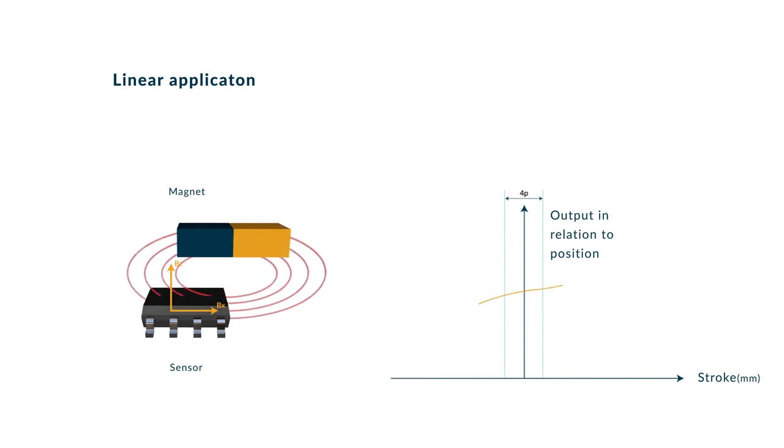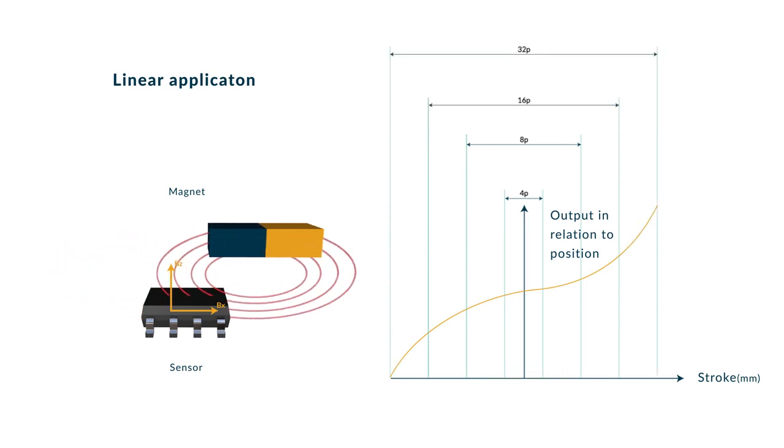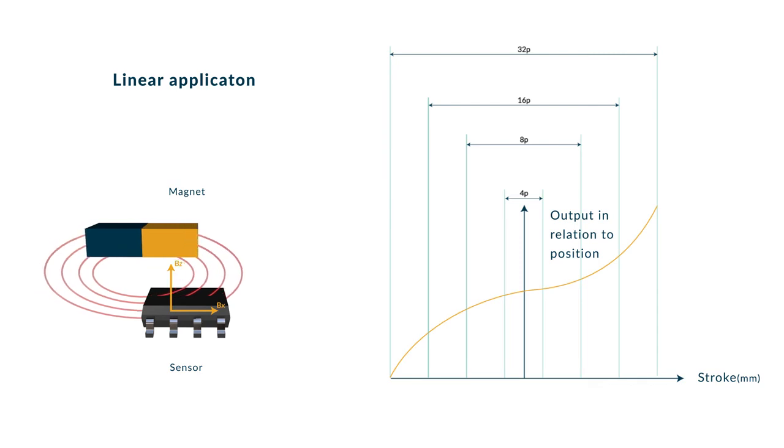As the desired range of movement increases, you can move up in the number of calibration points using the 8, 16, or 32-point method.